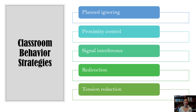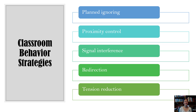Proximity control is simply walking so that you are in closer proximity to the learner — standing right beside them. Sometimes just your presence can decrease the problem behavior; they know you're watching. Proximity control is probably a negative reinforcement procedure: when you get close to the child, there's a kind of threat that they should be behaving correctly, so to reduce the threat they engage in appropriate behavior and then you move away.